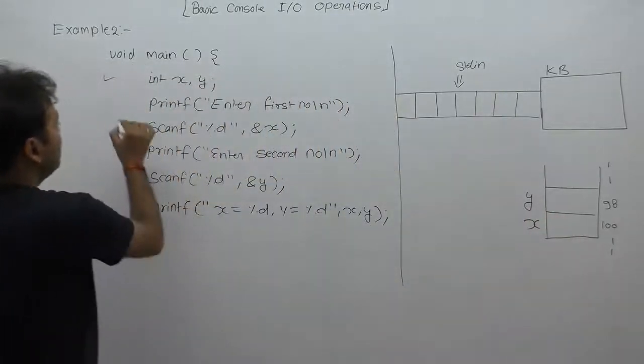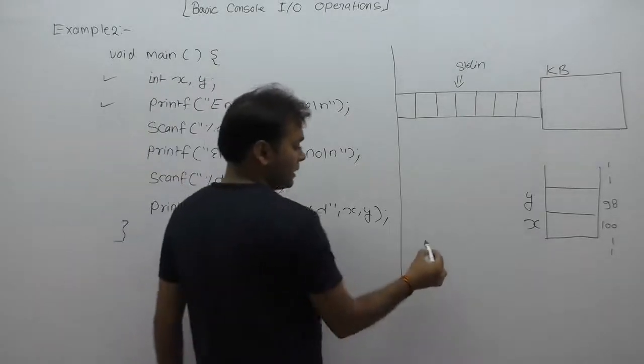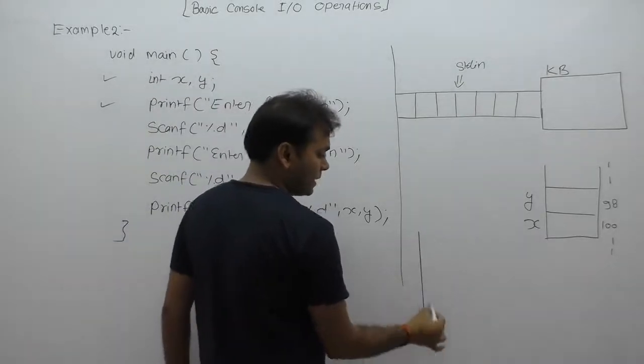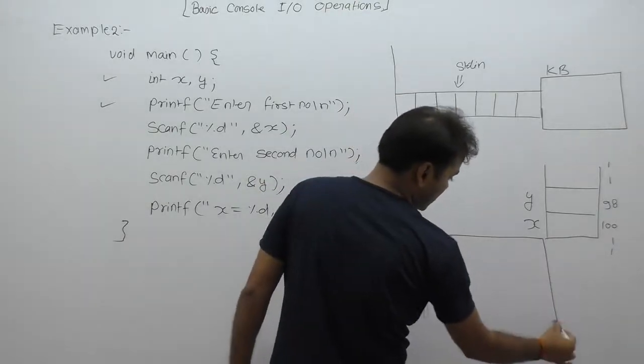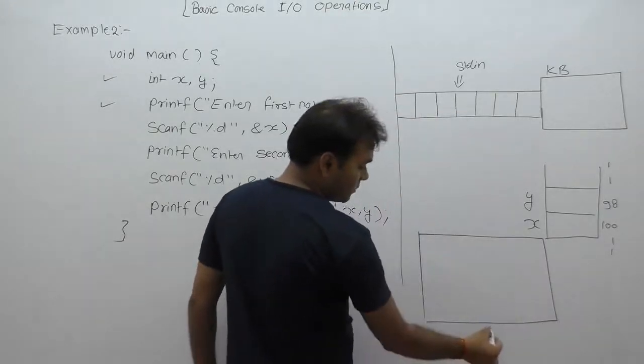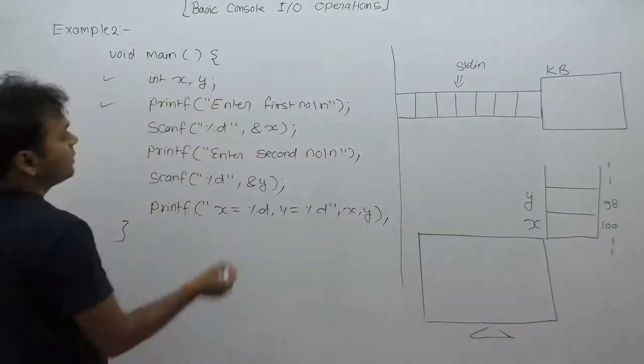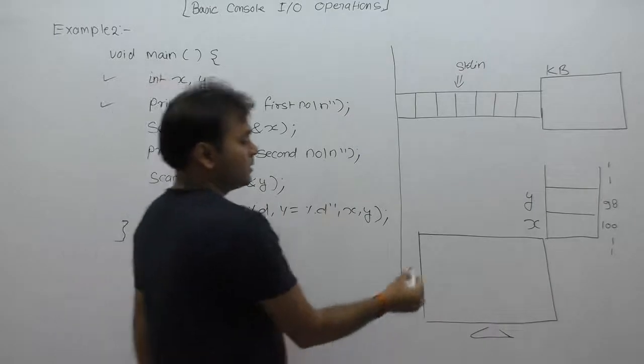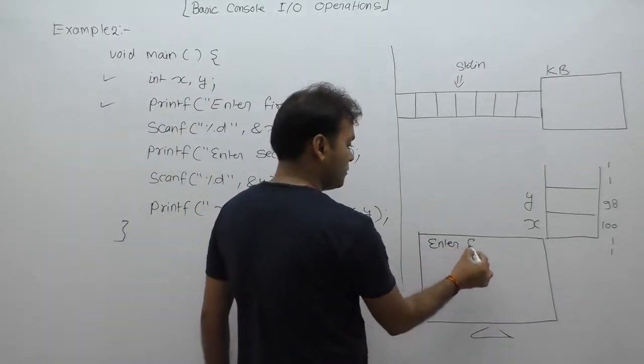Next one, second step: printf. According to working here, displaying output monitor, displaying one message on the output device monitor. Therefore we are representing some monitor here. First of all, enter first number. Therefore message printed as enter first number.